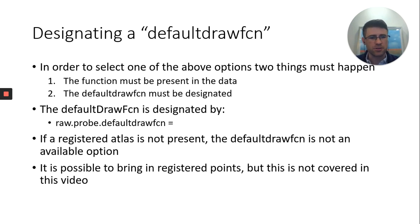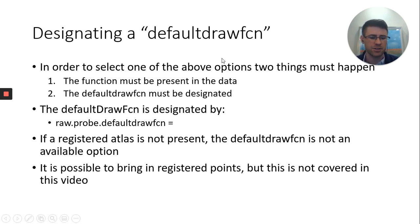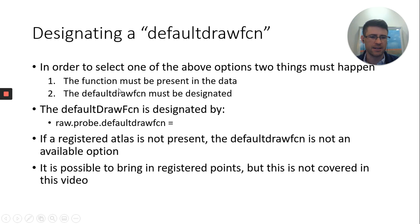And specifically, in order to call these, you're going to use the default draw function. The default draw function is a property of the raw.probe variable. And you can see it right here. So in order to call it, you'd say raw, raw being your data you loaded in, .probe.defaultDrawFunction equals. Then you'd actually state one of these in a string format. So if a registered atlas is not present, you actually won't be able to call the default draw function. And the easy way to do that is you can say raw.probe.